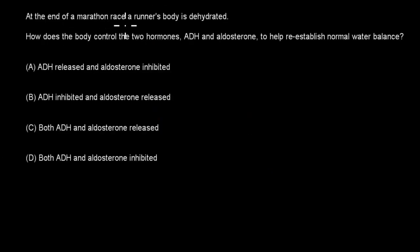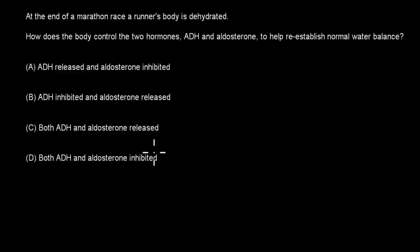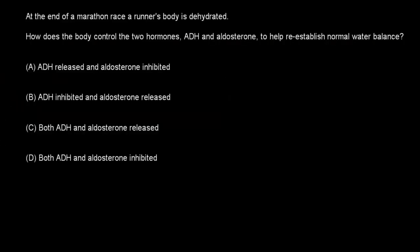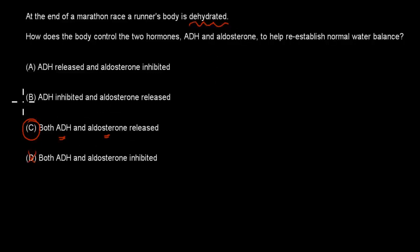Next: At the end of a marathon race, a runner's body is dehydrated. How does the body control ADH and aldosterone to reestablish normal water balance? A: ADH released and aldosterone inhibited. B: ADH inhibited and aldosterone released. C: Both ADH and aldosterone released. D: Both ADH and aldosterone inhibited. The correct answer is C — both ADH and aldosterone are released. ADH helps increase water levels and aldosterone helps increase water and salt levels, so both help restore hydration. All other options are incorrect.